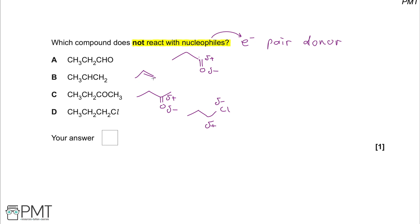In propene, we don't have a centre of electron deficiency. In fact, this alkene carbon-carbon double bond is a centre of high electron concentration, and that is not going to react with a nucleophile. So our answer is B.